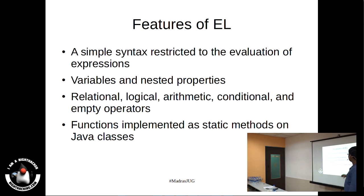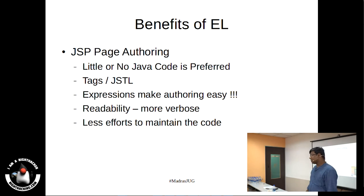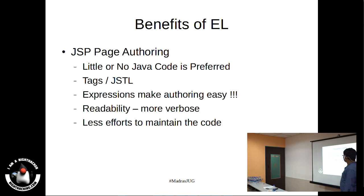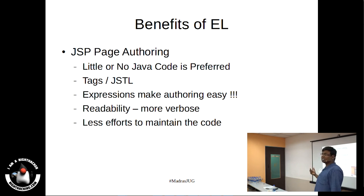A normal expression looks like anything defined within a dollar sign and curly brace. It can be relational, logical, arithmetic, or conditional expressions, including the empty operator. With Java EE 7 you can also have functions implemented as static methods in Java classes and invoke them as well, and you can also write custom tags. Operators like gt and eq make it easier to write without angle brackets — readability and maintainability are very high.